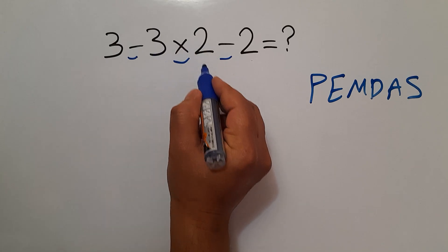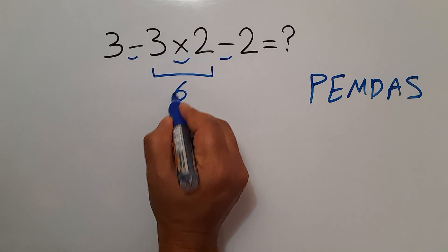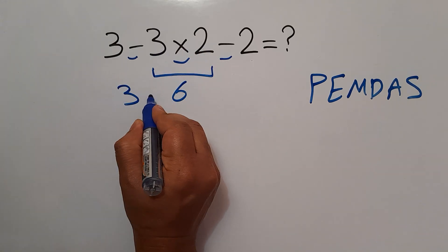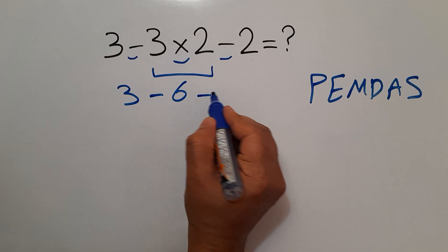3 times 2, which equals 6. So, 3 minus 6 and minus 2.